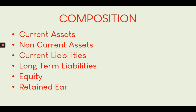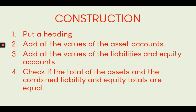On the liabilities side, current liabilities are short-term obligations that should be paid within a year, while long-term liabilities exceed a year in payment. We also have equity accounts: the capital account and the retained earnings account. To construct a balance sheet: number one, set up a heading; number two, add all asset account values; number three, present liabilities and equity accounts and get their individual sums; number four, check that the total assets equal the combined liabilities and equity. If they are not equal, there has been an error in the bookkeeping cycle.